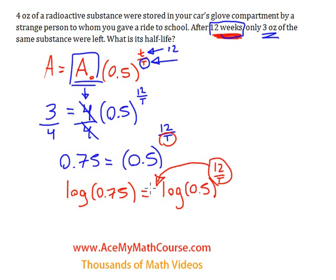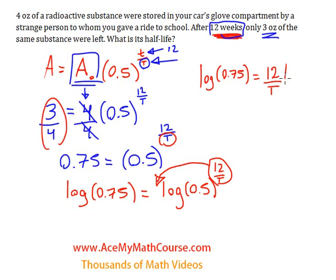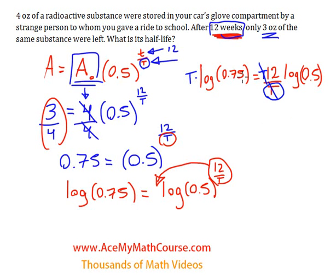So I have log of 0.75, which is 3 over 4, equals 12 over T times the log of one half. Then I want to isolate for T, so I will multiply both sides of the equation by T. They cancel out over here, so I have T times the log of 0.75 equals 12 log of one half.